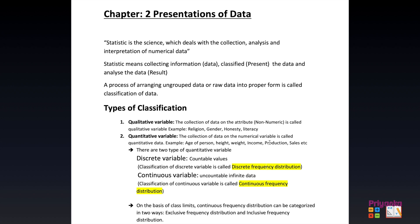A quantitative variable refers to the collection of data on numerical variables. Examples include age, height, weight, income, and production — these can be counted in numbers. There are two types of quantitative variables: discrete variable and continuous variable.